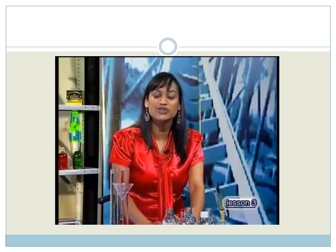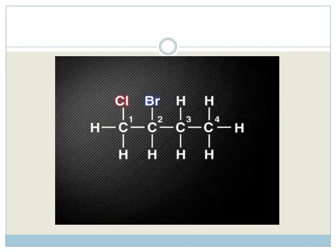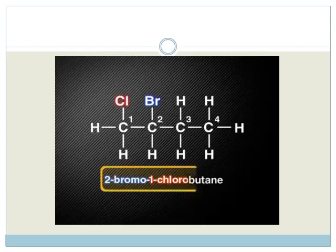Let's see what happens when we use multiple halo-functional groups on the same structure. Here we have a molecule with a bromo group and a chloro group on it. If we look for the name of the backbone, it is easy to identify it as butane. We can also see that numbering from the left side will give us a 1,2 pattern. This is better than 2 plus 3. We place the names of the functional groups alphabetically. So, in this molecule, first bromo and then chloro. So this is 2-bromo-1-chlorobutane. We must remember to separate the words from numbers using a dash each time.